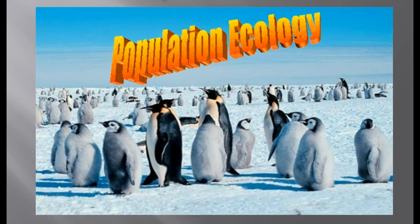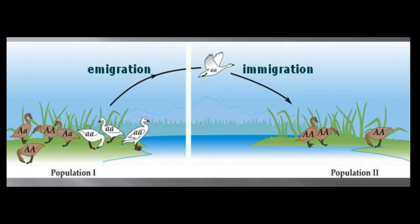Population density — how many people live in a specific area — is the result of an interplay between processes that add individuals to a population and those that remove individuals. Immigration is the influx of new individuals from other areas, while emigration is the movement of individuals out of a population. In this picture, you see a goose leaving one group — emigrating — and flying to another population. Leaving is emigration, arriving is immigration.